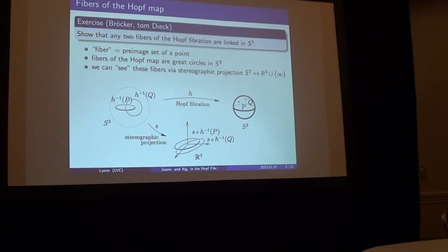All of the points that map to P. All of the points that map to Q. They are, in fact, linked circles. Okay, now that starts to challenge the visualization abilities of me and probably lots of us. So how do we see this? How do you see what's going on in S3?